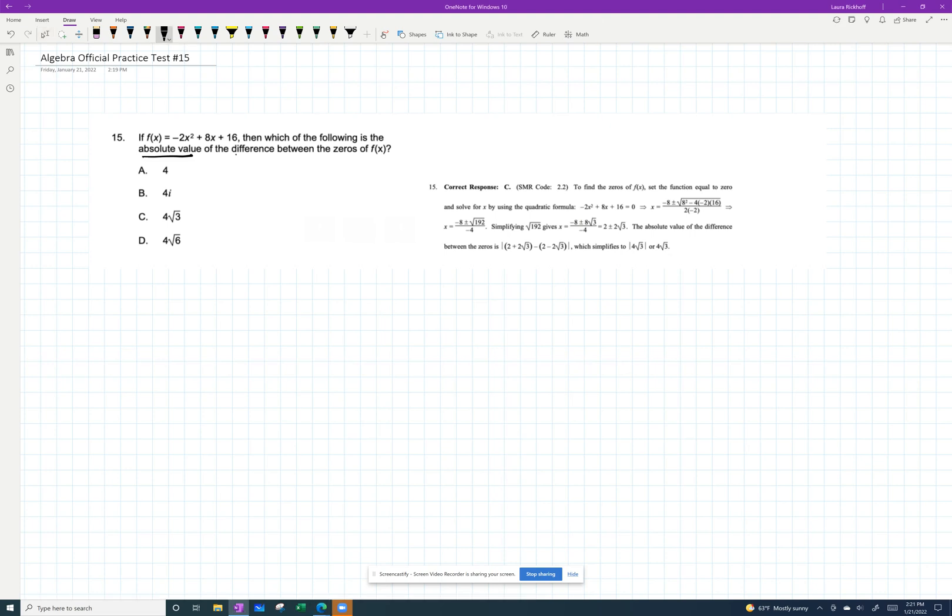So they want the absolute value of the difference between the zeros. All right, fine. So I'm just going to find the zeros, then find their difference, and then find the absolute value. To find the zeros, I want to find out the values of x that make this equal to zero.